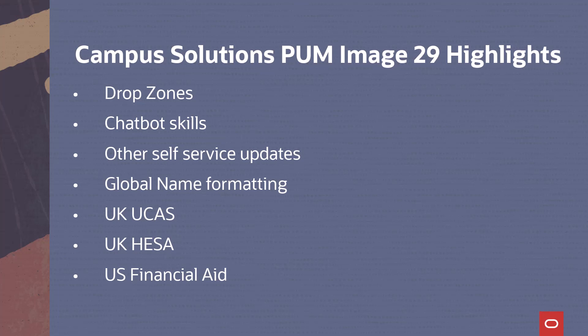We'll review the latest in global name formatting, then move to a review of updates for regulatory regions, starting with the UK. For the US, we'll highlight updates for financial aid, SEVIS, NSC reporting, and an update to veterans tracking.